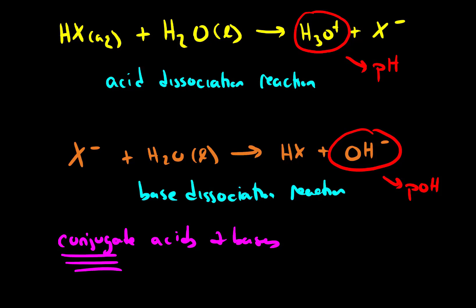Every single acid has a conjugate base. And all that means is if we start with our acid, the conjugate base is the molecule that results if we remove a proton. So this acid HX becomes the conjugate base X minus when it undergoes an acid dissociation reaction. So the conjugate base of HX is X minus.